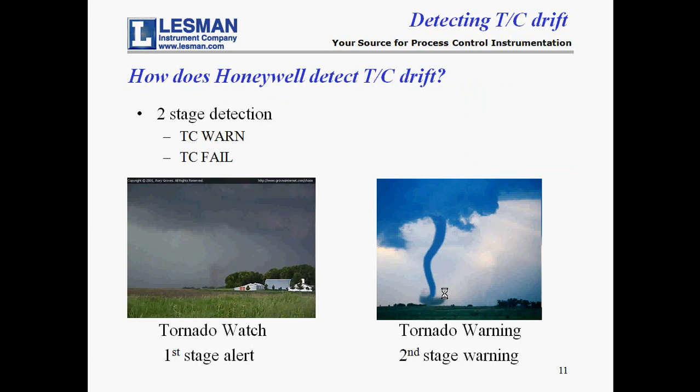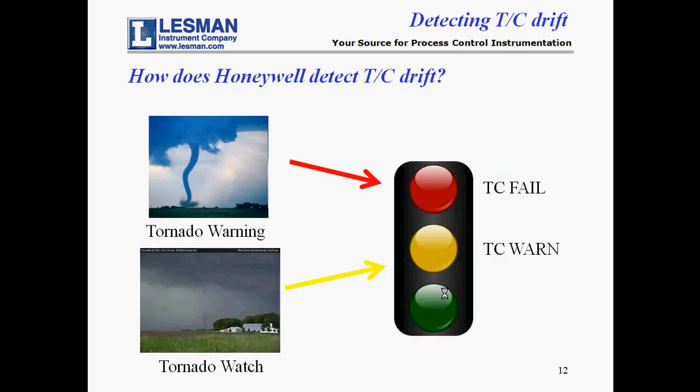These two stages are similar to tornado alerts. A tornado watch is a cautionary alert; a tornado warning, on the other hand, is an emergency state. A tornado watch is similar to the first stage alarm, TC WARN, which warns that the thermocouple is drifting. A tornado warning is like the second stage alarm, TC FAIL, which calls for immediate action to prevent burnout and process shutdown.